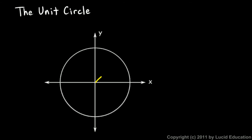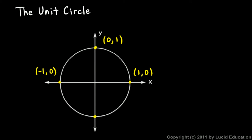The radius of this circle is exactly 1, and that means we know some specific points on the circle. This point is the point (1, 0), and this point up here at the top is the point (0, 1). Over at the left, this is the point (-1, 0).